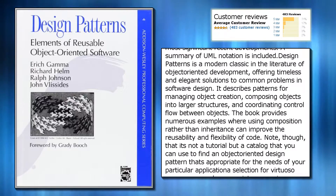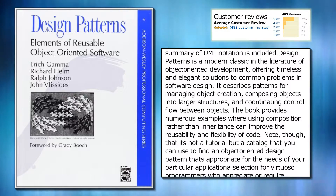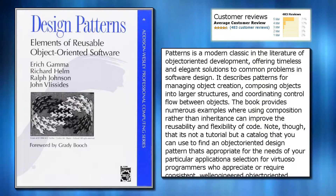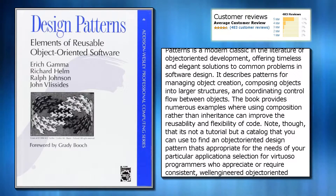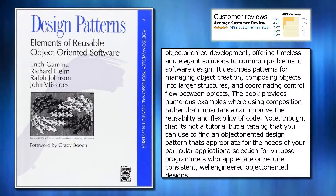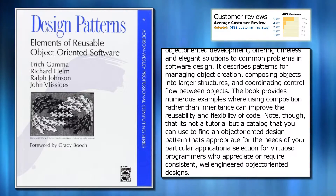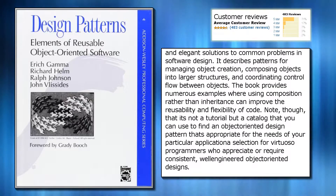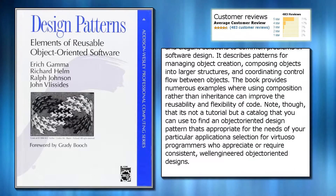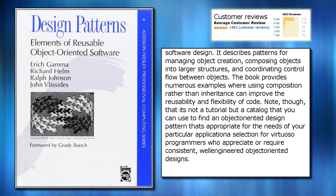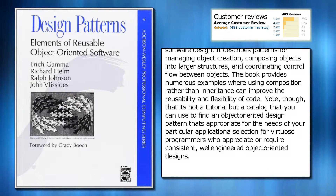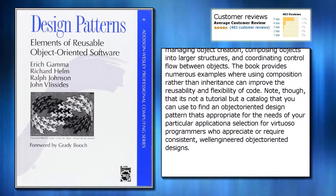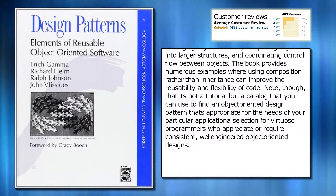It describes patterns for managing object creation, composing objects into larger structures, and coordinating control flow between objects. The book provides numerous examples where using composition rather than inheritance can improve the reusability and flexibility of code.